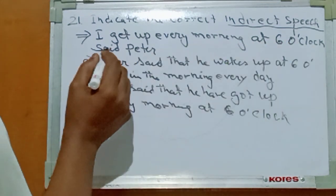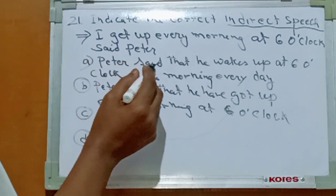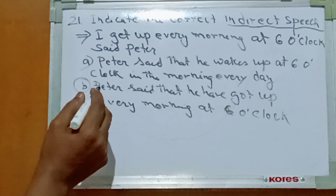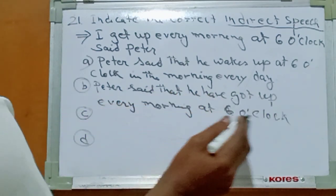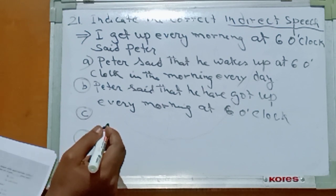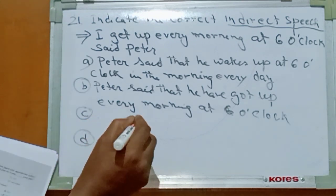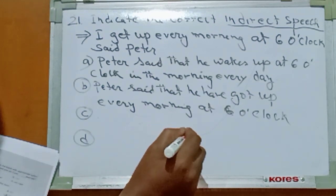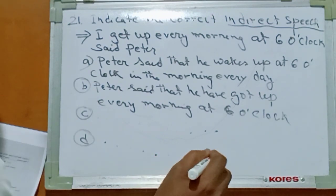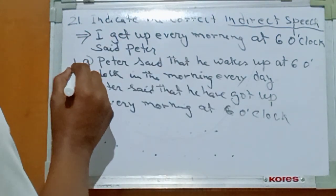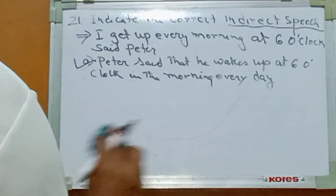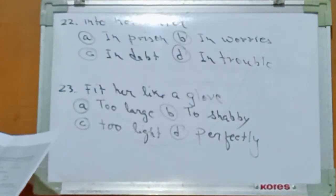Number twenty-one: indicate the correct indirect speech. The sentence is: I get up every morning at 6 o'clock, says Peter. Option A: Peter said that he wakes up at 6 o'clock in the morning every day. The right answer is Option A.